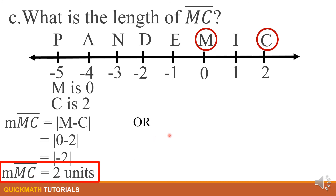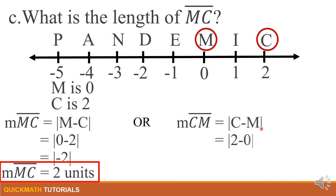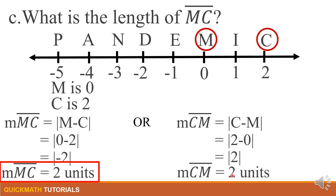You can also start from C to M: |C − M| = |2 − 0| = |2| = 2. Therefore, the length of line segment CM = 2 units. So it is your choice whether you use one order or the other.